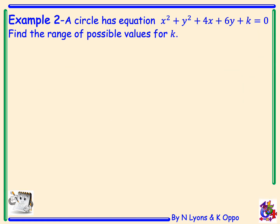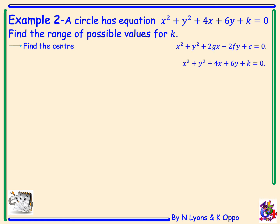Example 2. A circle has equation x squared plus y squared plus 4x plus 6y plus k equals 0. Find the range of possible values for k. Remember, for this to represent a circle we need g squared plus f squared minus c to be greater than 0. We will compare our circle equation with the general form.